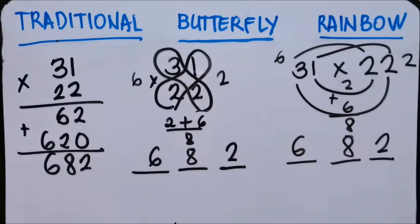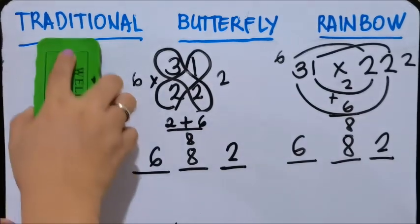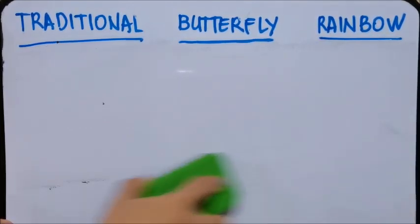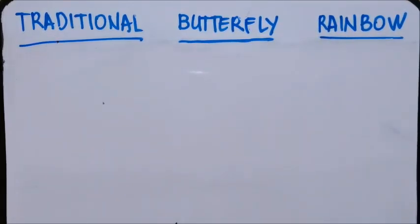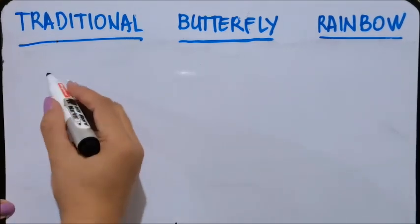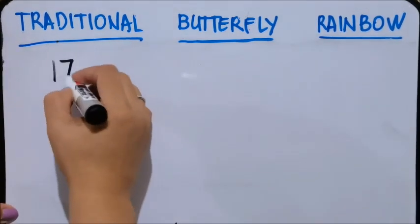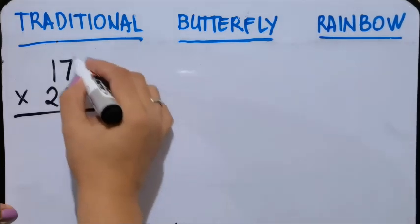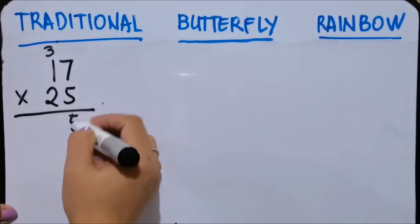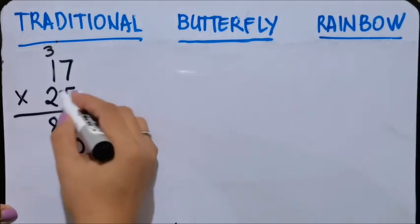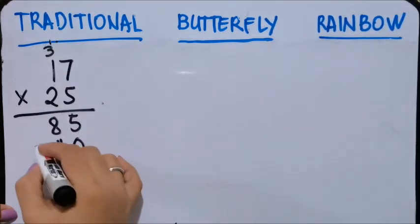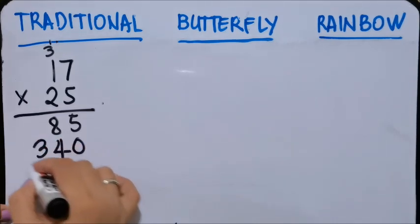Okay, another example. Let's try 17 times 25. So 5 times 7 is 35, 5 times 1 is 5 plus 3 is 8.